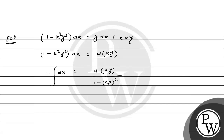Now we integrate both sides. Integrating d(xy) / (1 - (xy)²) gives x = (1/2) ln|(1 + xy) / (1 - xy)| + C, using the standard integration formula for 1/(a² - t²).